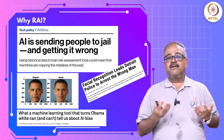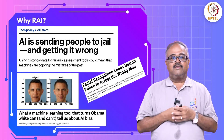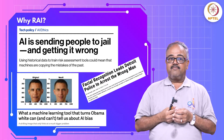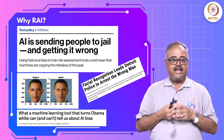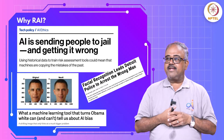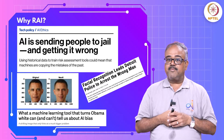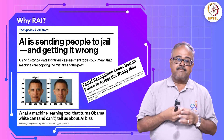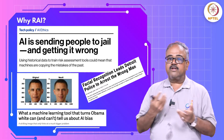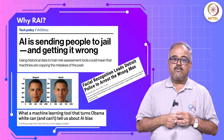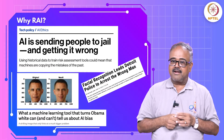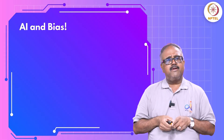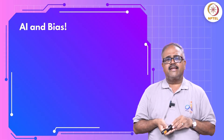and facial recognition led the police to arrest the wrong person in a shoplifting case. There are also things like a picture of Obama where, when the AI was asked to increase the resolution of the picture, it not only made the picture better but also converted Obama into a white man.